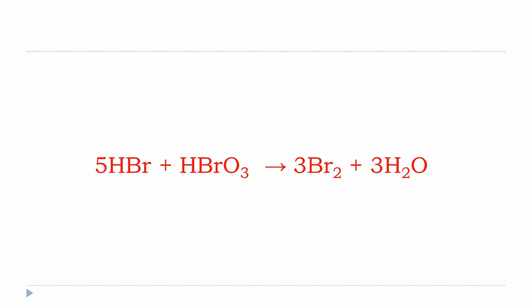The final balanced equation is: 5HBr + HBrO3 → 3Br2 + 3H2O, noting that bromine exists as a diatomic molecule.